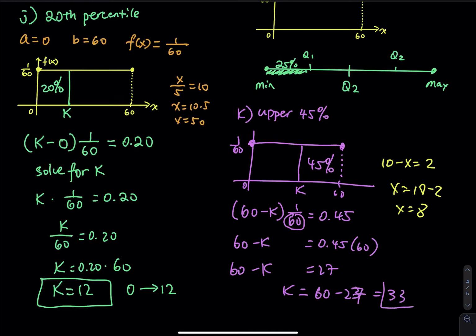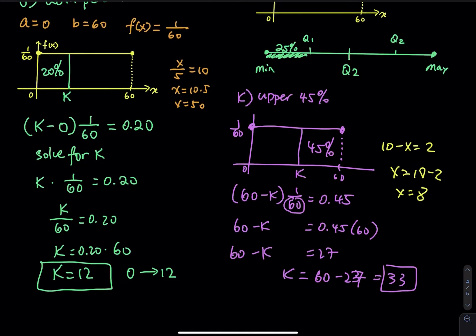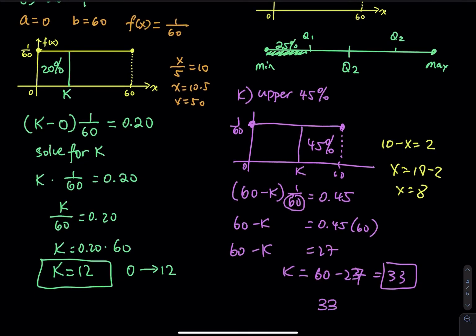What does that mean? We have a time window from 33 to 60 that covers 45 percent of the area. That means the probability that a student can answer a quiz question between 33 and 60 seconds is 45 percent. If I give you 33 to 60 seconds to answer a question, the probability you can answer it is 45 percent.